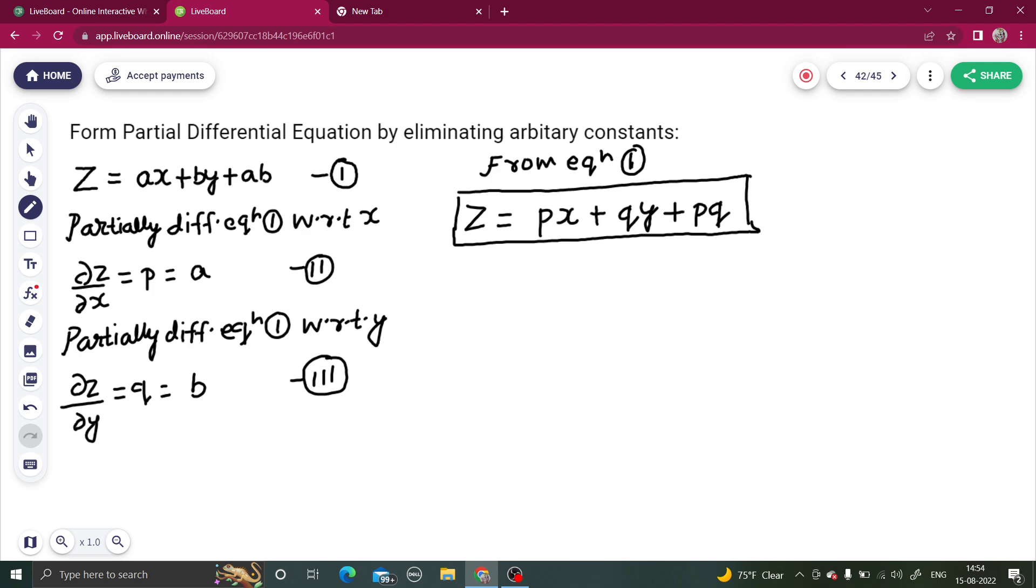So once you get the value of a and b in terms of p and q, you are anyway going to replace it and remove the arbitrary constant. You have eliminated the arbitrary constant and you have got your partial differential equation. So I hope you enjoyed it. Thanks and have a very nice day.